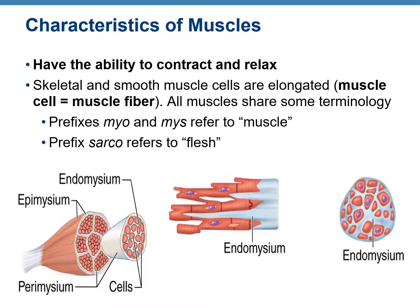The most important characteristic of muscles is their ability to contract and relax. There are certain prefixes commonly used in association with muscular tissue. Those prefixes are myo and mys, which refer to muscle, while sarco — as in sarcolemma and sarcoplasm — refers to flesh.